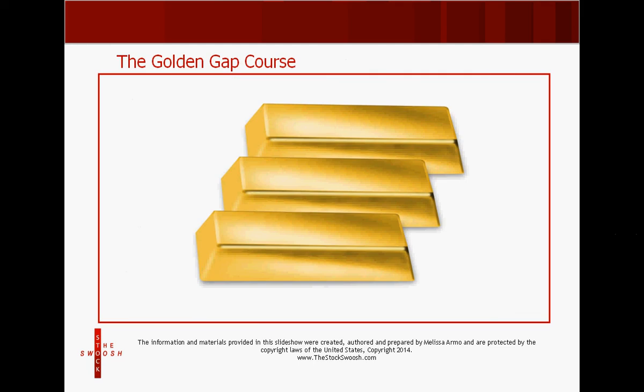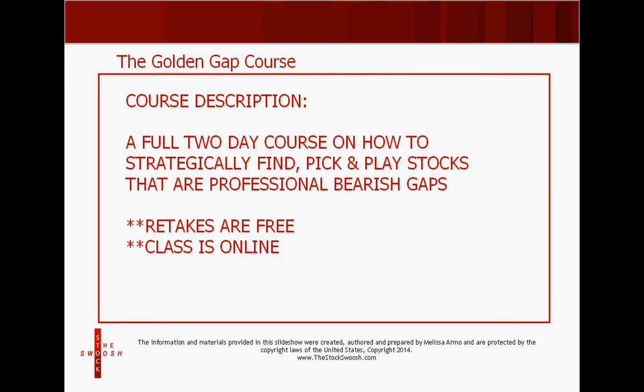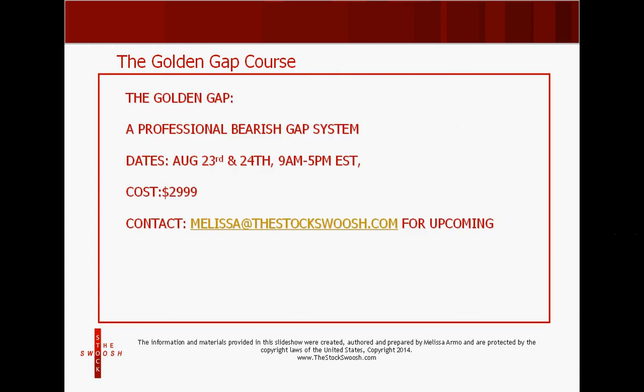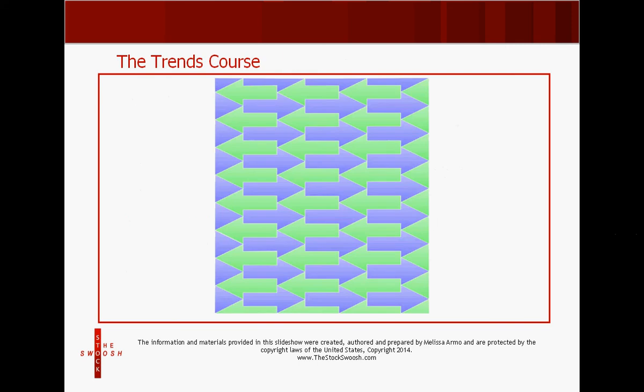I teach a class on this method that we're going to discuss in the live webinar on the 18th. The class is called the Golden Gap Course — a full two-day course on how to strategically find and play stocks that are professional bearish gaps. Retakes for this class are free when you sign up for it the first time. The class is also online, so you can be anywhere in the world. Class dates are August 23rd and 24th from 9 a.m. to 5 p.m. Eastern Time. The cost is $29.99. Email me at melissa@thestockswoosh.com for how to sign up.